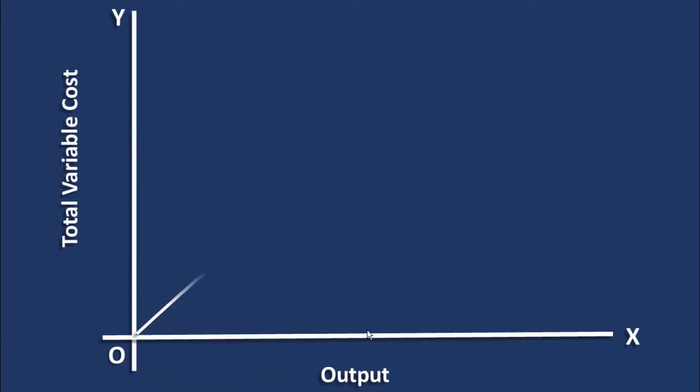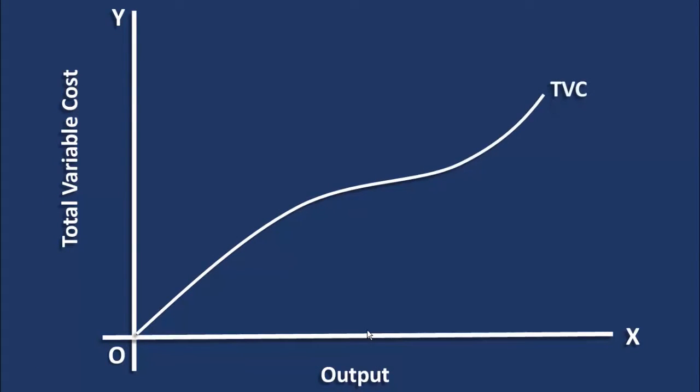The total variable cost curve starts from the origin. It means at zero output, the total variable cost is also zero. From then on, it slopes upward. It increases along with the output. But it is not a linear curve having a uniform slope throughout its length. At first, it is concave downwards. After that, it is concave upwards. The total variable cost curve takes an inverted S shape.